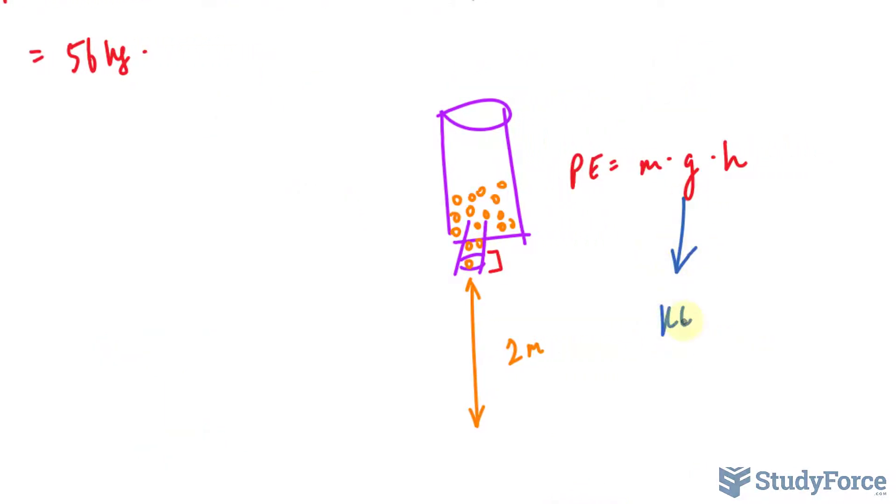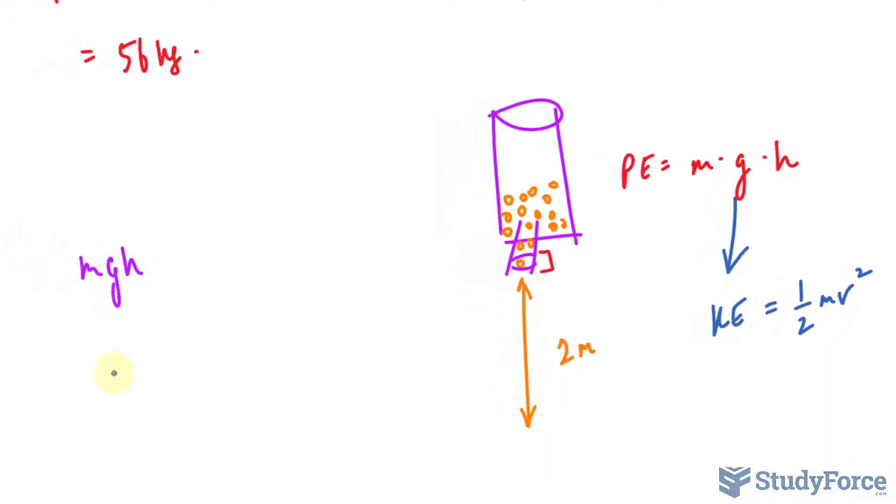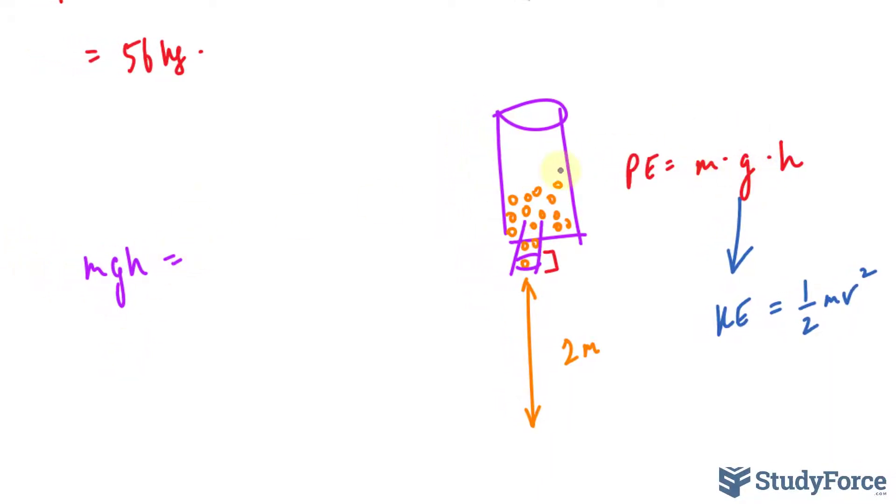And potential energy is calculated using the formula mass times the acceleration due to gravity times the height. All this potential energy will go into the kinetic energy required to push down the scale. And that is the kinetic energy. So all of this gets transferred into the kinetic energy.